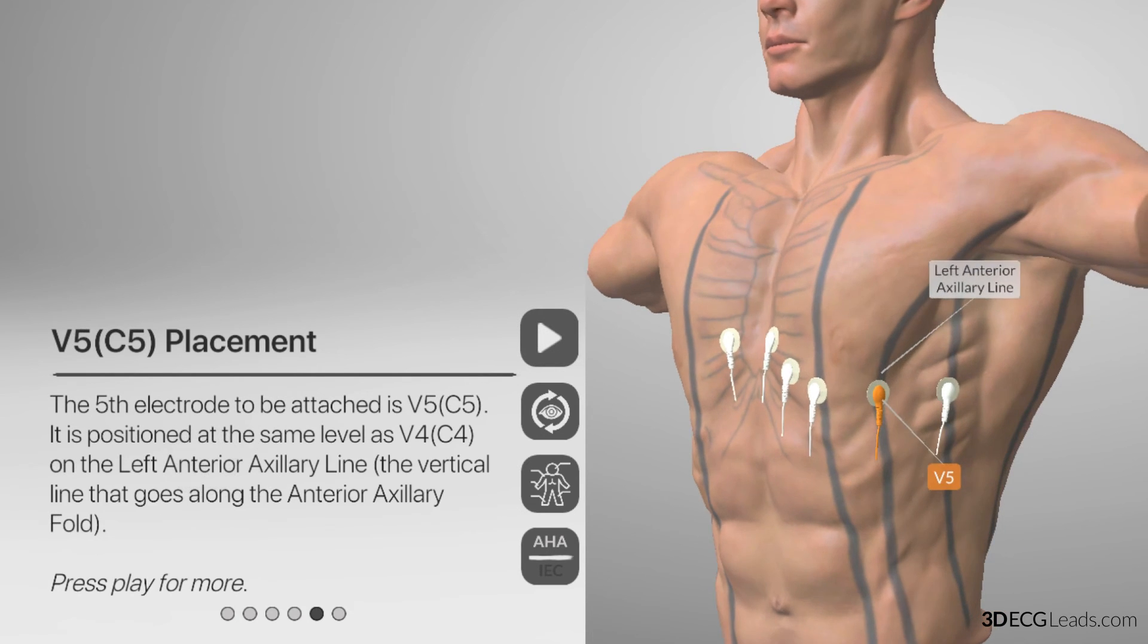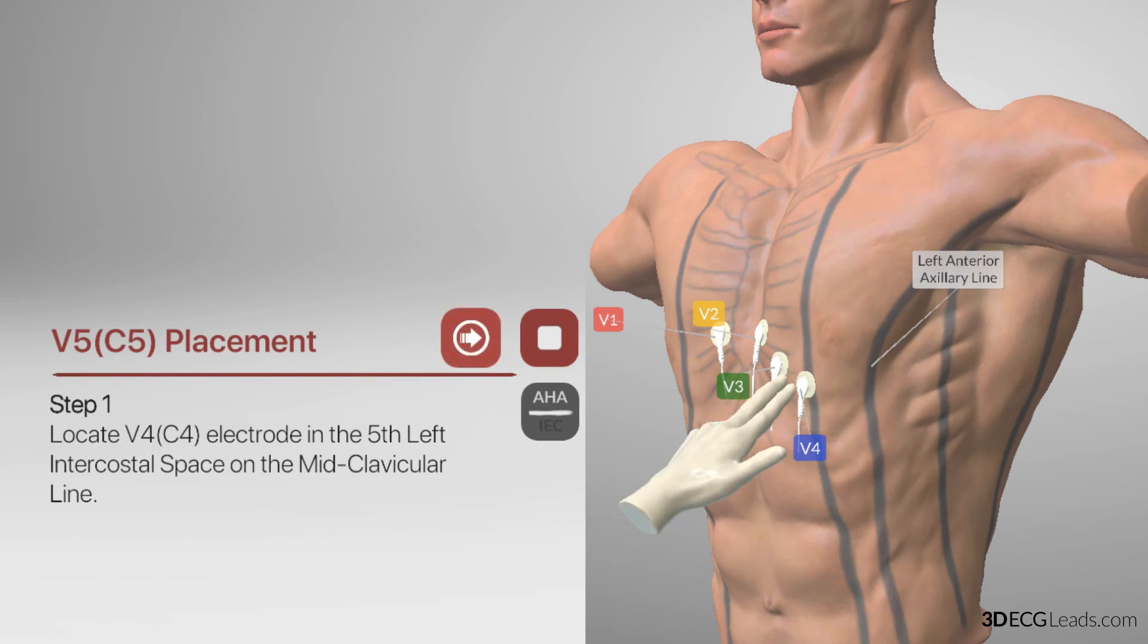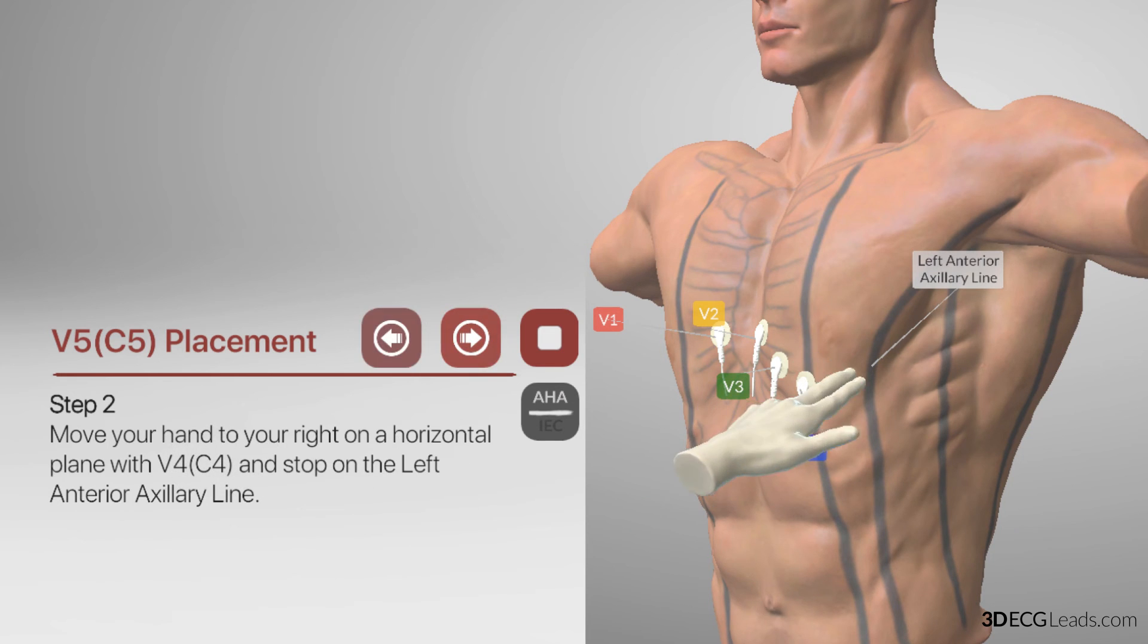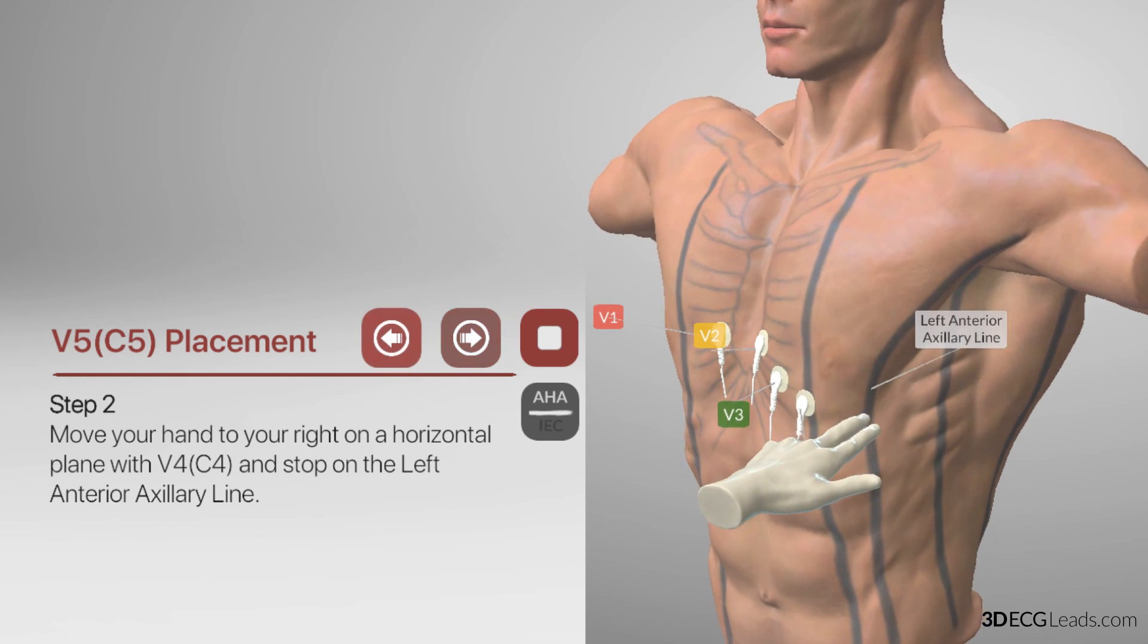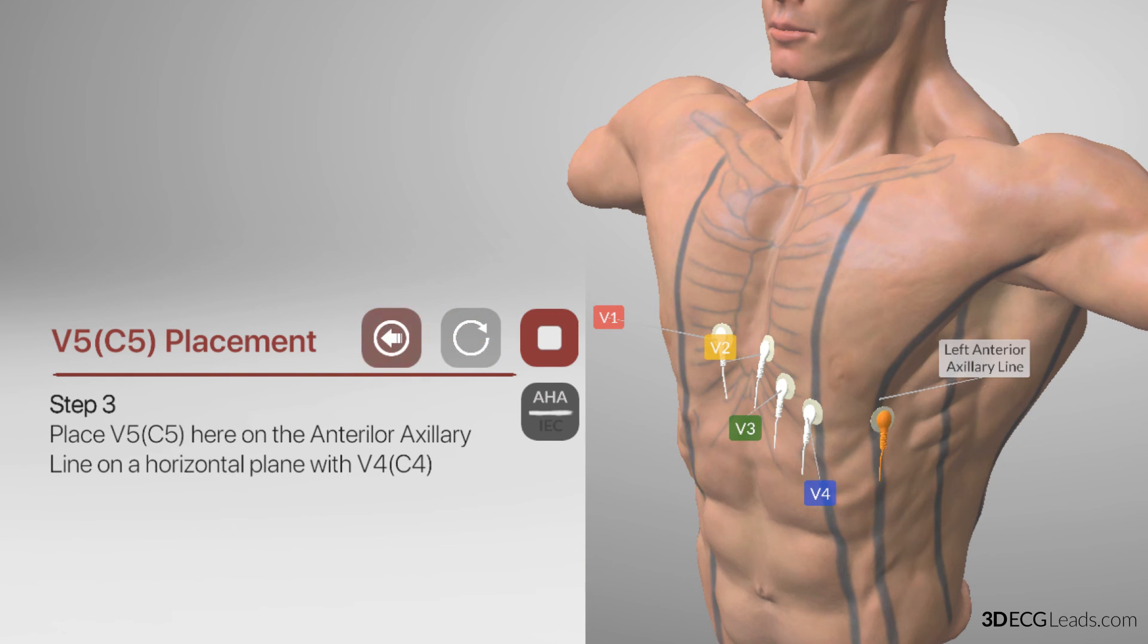The next electrode to be placed is V5. V5 is placed horizontally at the same level with V4 on the left anterior axillary line, which is the line here. We shall continue to play and view V5's placement technique. First, you have to identify V4 and from there, you need to move your hand to your right on a horizontal plane with V4 and stop on the left anterior axillary line. This is where you place V5.